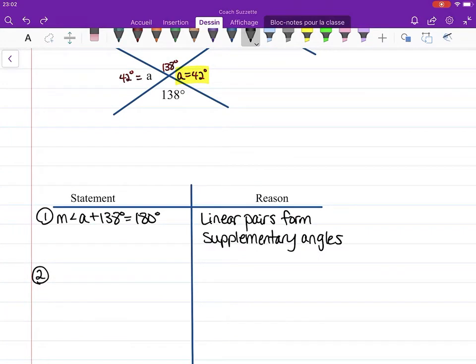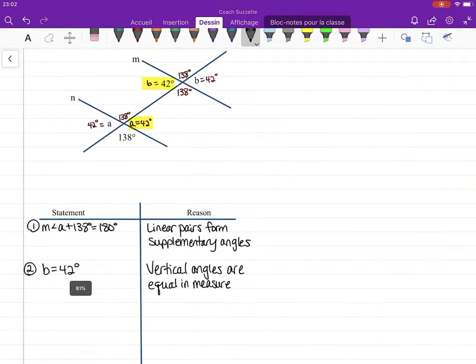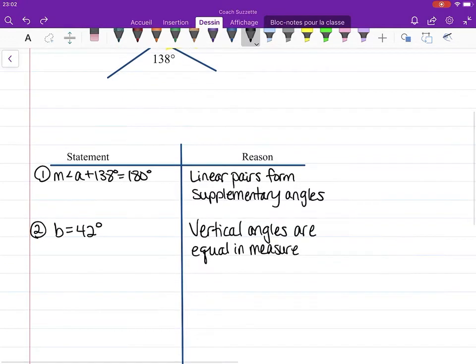Vertical angles are equal in measure. We got m∠a = 42° by using 180 minus 138—that was by the subtraction property of equality.